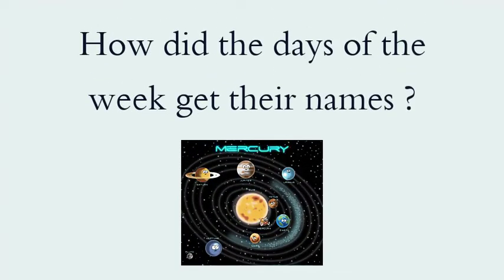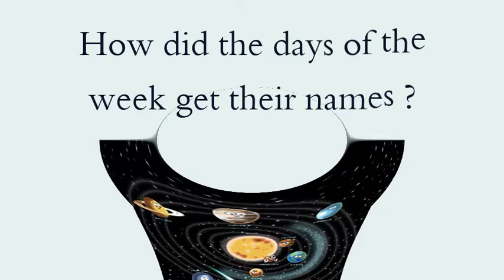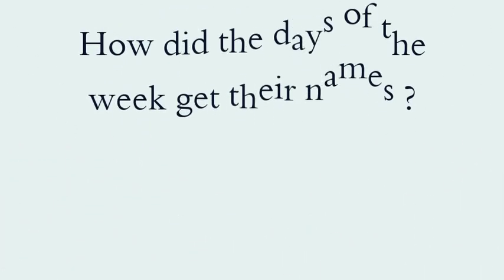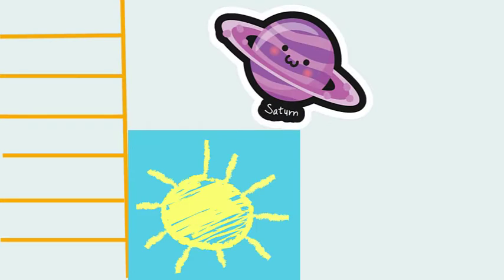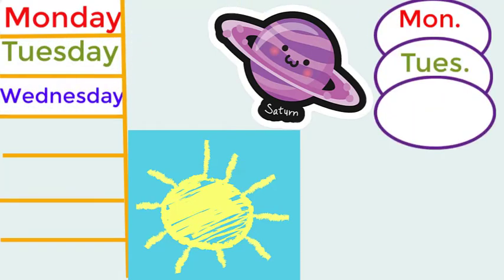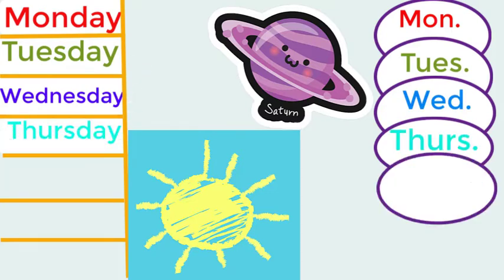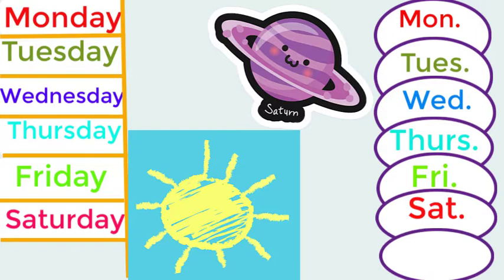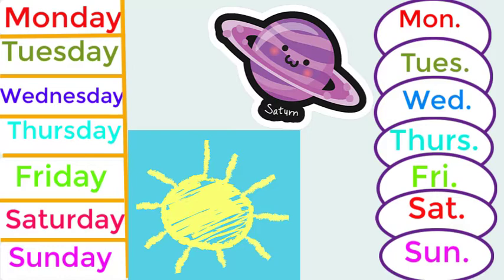Hello, today I am going to talk about the days of the week and how did the days of the week get their name? The first one is Monday, and here you can see the abbreviations: Tuesday, Wednesday, Thursday, Friday, Saturday, and Sunday. Keep in mind, you must write all the days of the week with a capital letter.